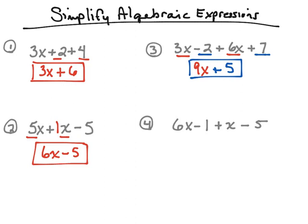Number four — same idea, combine the like terms. Six x combined with one x gives seven x's. We can also take negative one and negative five and combine those — they're like terms. Negative one plus negative five gives a negative six. Therefore we can simplify this to seven x minus six.